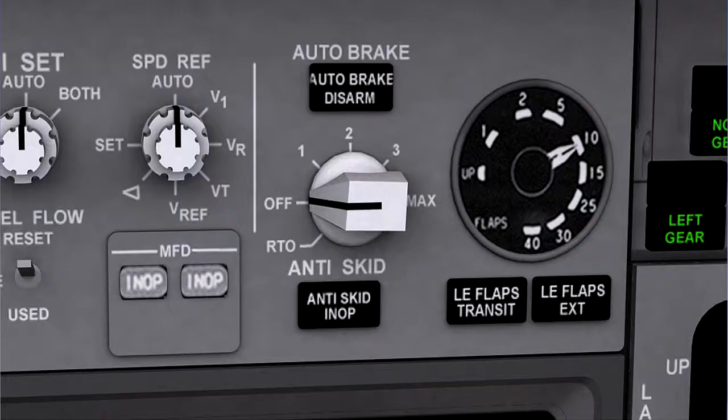Anti-skid protection is provided during autobrake operation. If the anti-skid system is unserviceable, then the autobrake system is disabled.